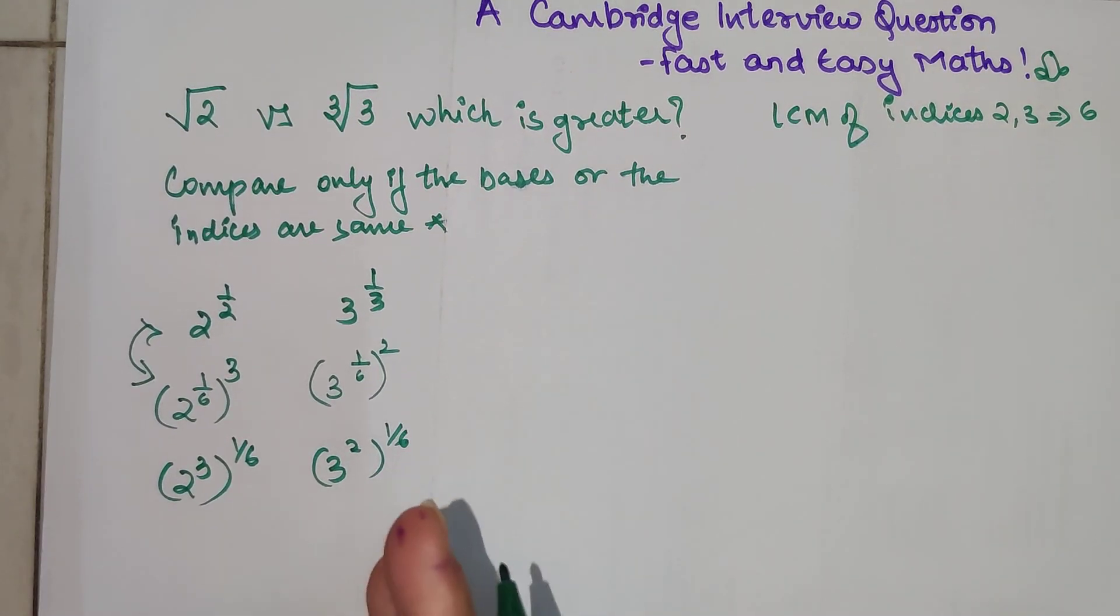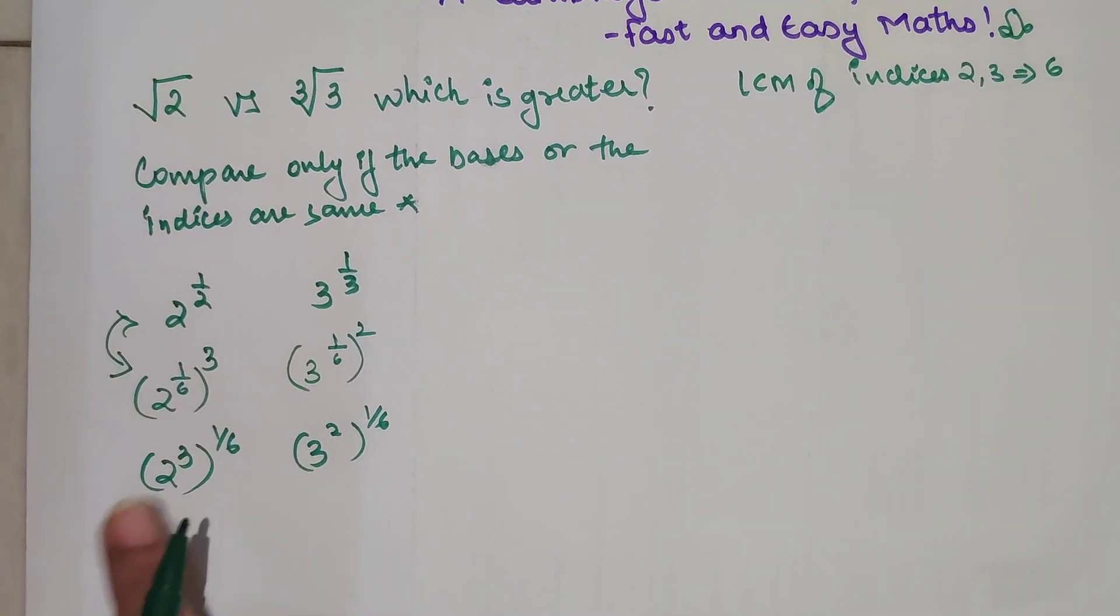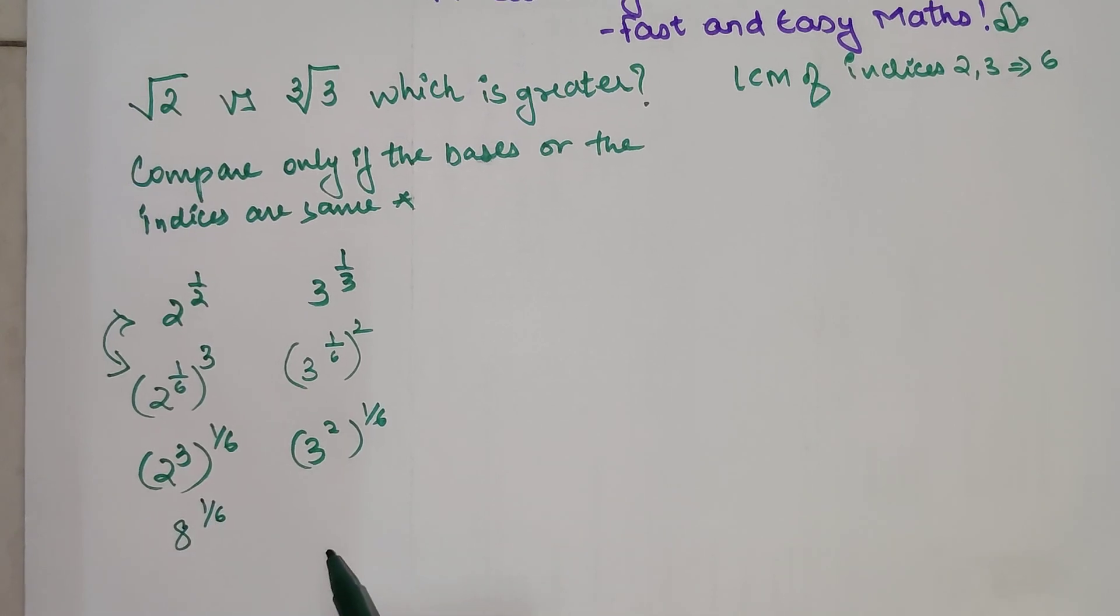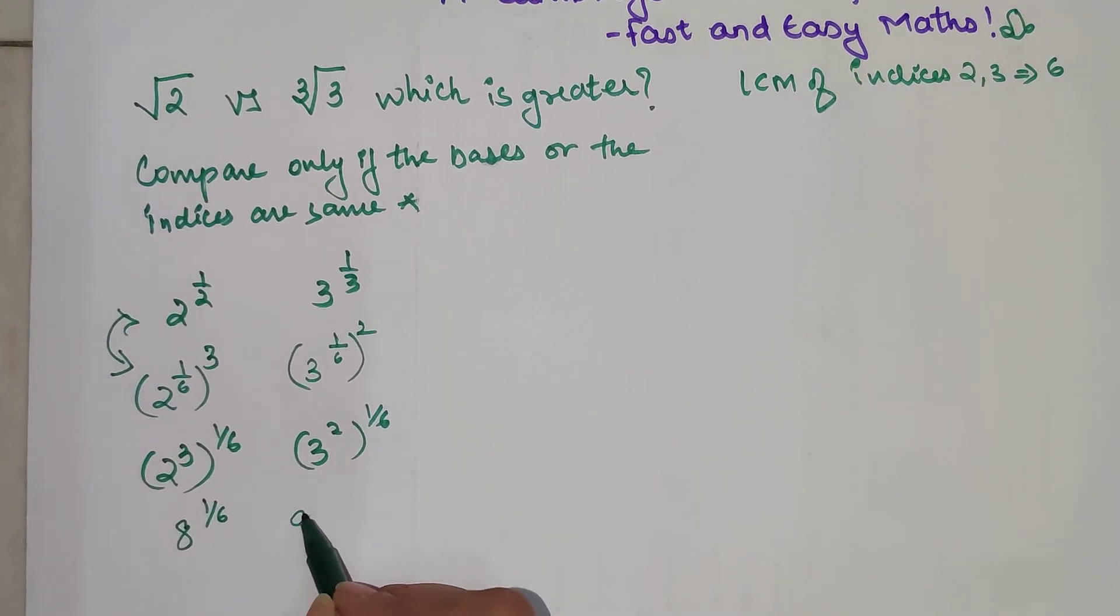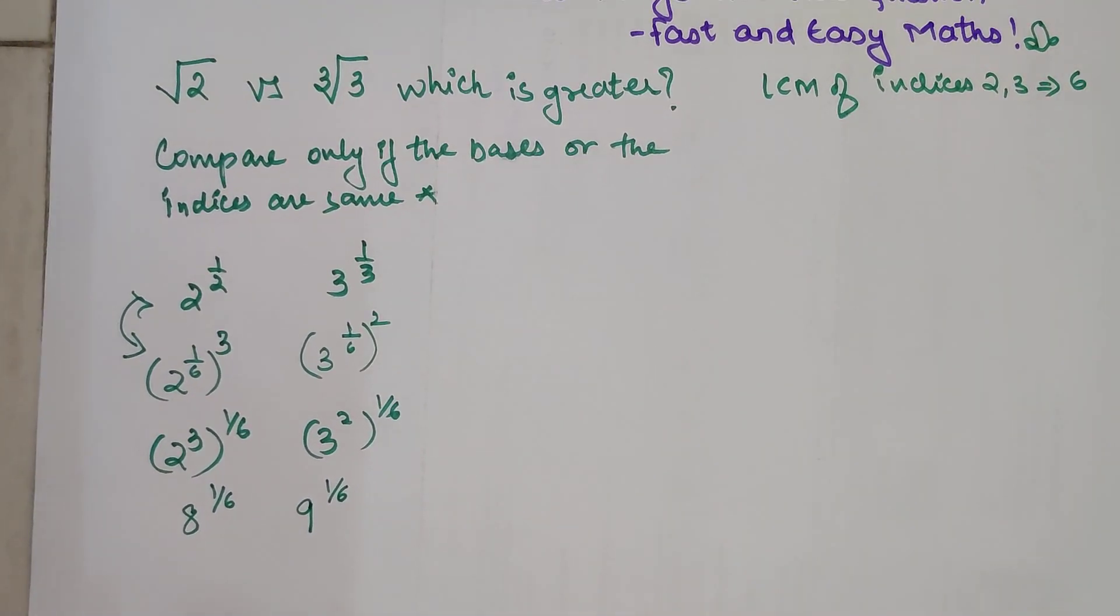If you are liking this, please go ahead and hit the like button because that gives me tremendous encouragement. So now 2 raised to 3 is nothing but 8 raised to 1 by 6, and 3 raised to 2 is nothing but 9 raised to 1 by 6. Now comparison between the two can be possible because the indices are now equal.